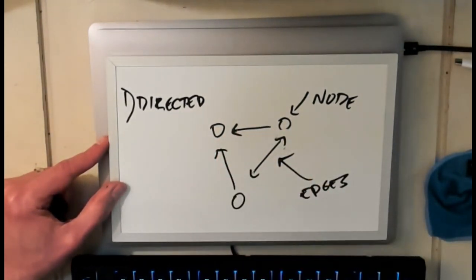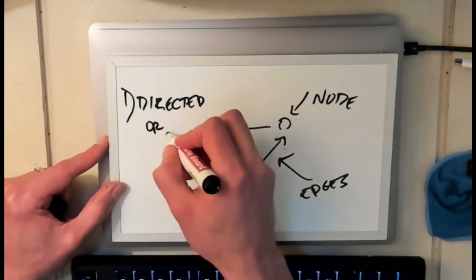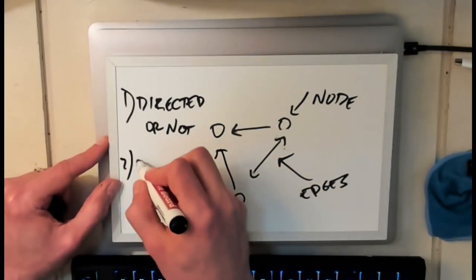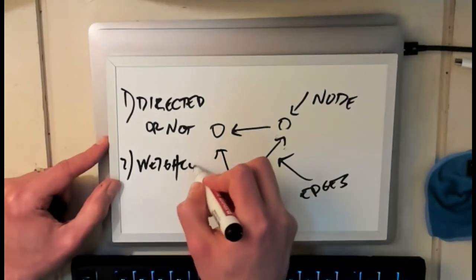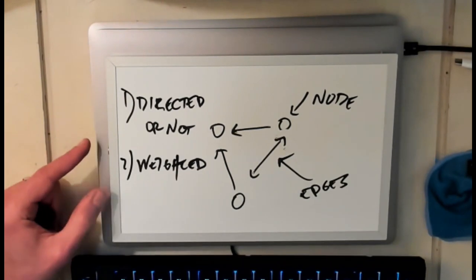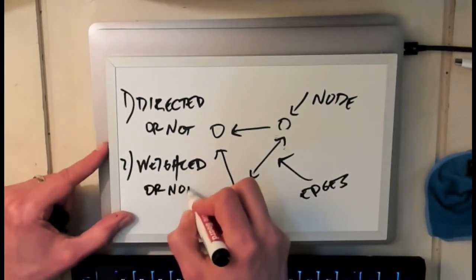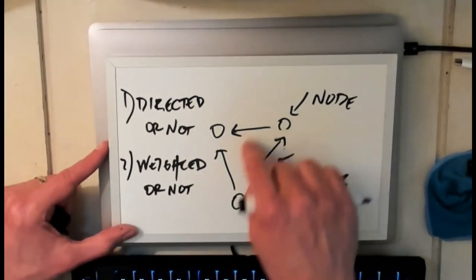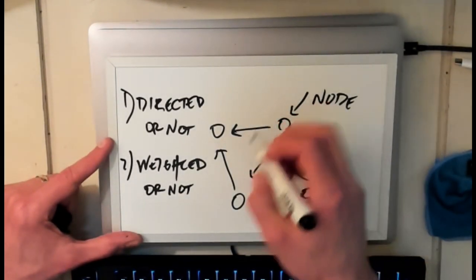Okay so the first property is directed or not. The second property is weighted. I have terrible handwriting. I can barely write. Does that look like weighted? Sort of. Like a fancy version of weighted. Weighted or not. And what this represents is do the edges have weights associated with them. Weight is usually some additive property like an integer.